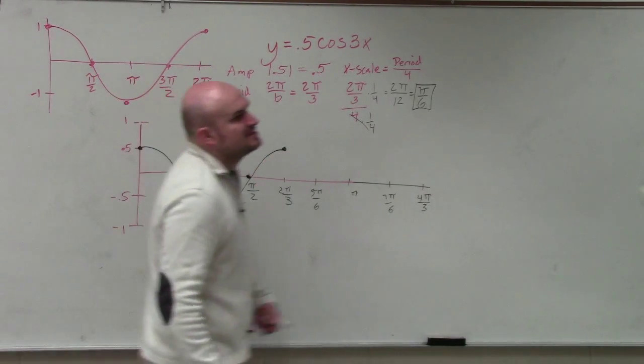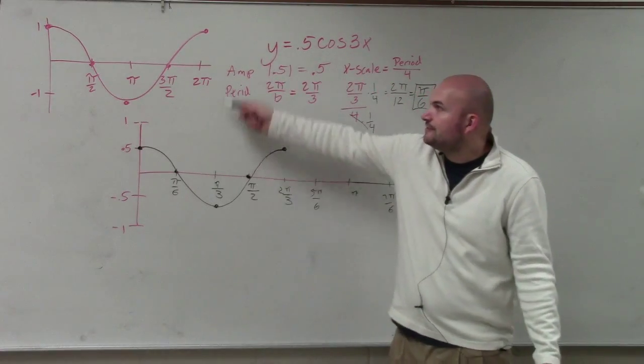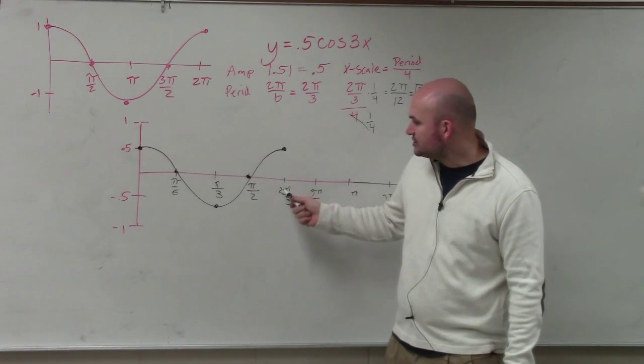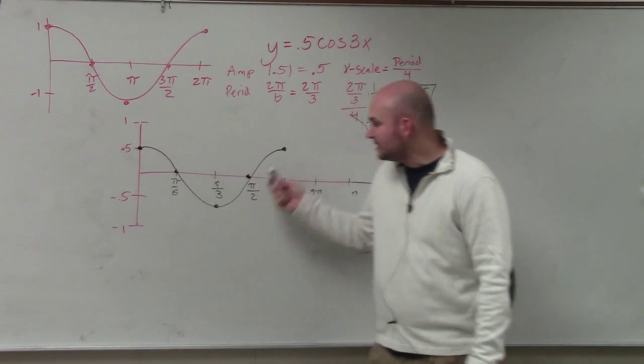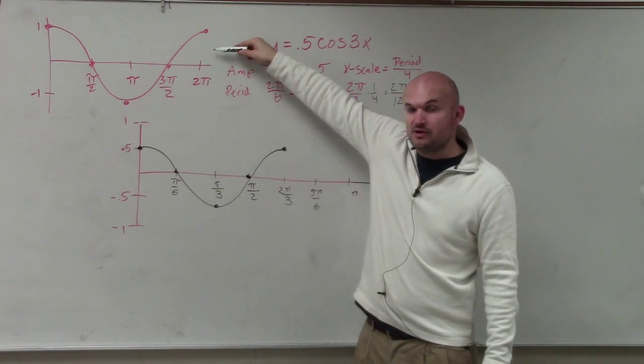The graph is exactly the same. The only difference is the amplitude and period are different. Now the time it takes to complete a cycle is 2π/3, whereas the initial period of the parent graph is 2π.